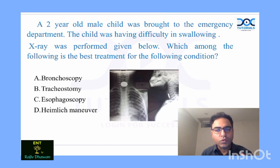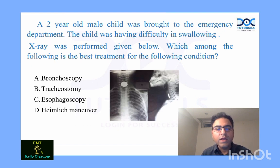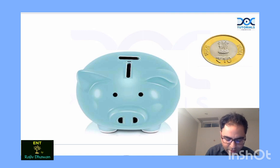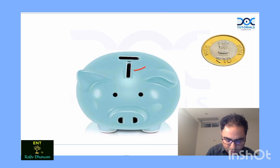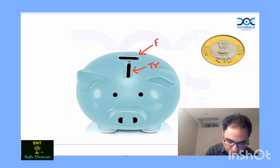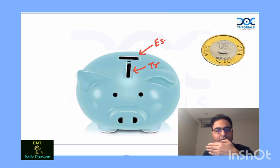In such questions, we always think: is it an ingested foreign body or an aspirated foreign body — meaning, is the foreign body in the esophagus or in the trachea? For that, remember the model we discussed in class: the greedy piggy bank. It has two holes — the front hole represents the trachea, whose biggest diameter is anterior-posterior, and the back hole is for the esophagus, whose largest diameter is side to side.